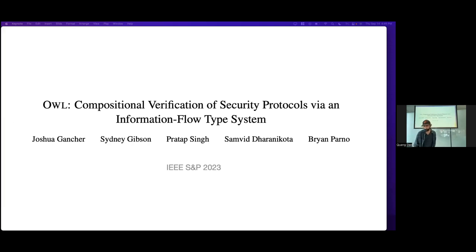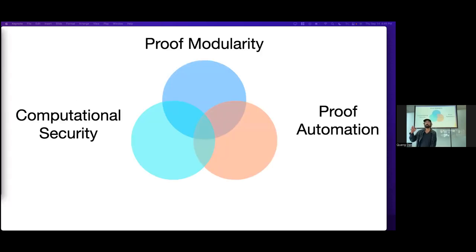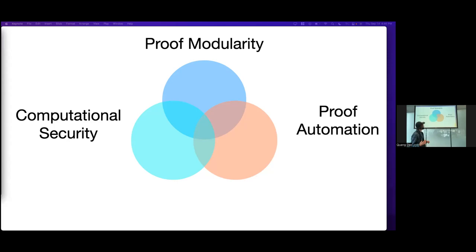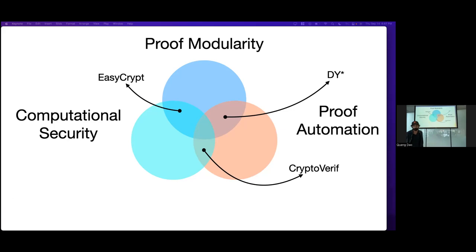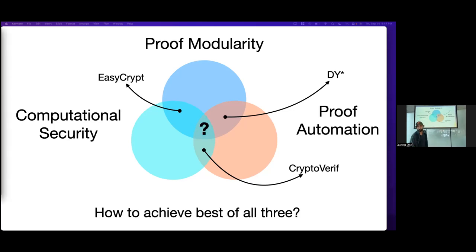For this proof assistant called OWL, there are broadly three components important for a scalable proof assistant: computational security, modularity (also called compositionality), and proof automation — meaning the user does not have to manually do a lot of proof effort to get the protocol to be secure. Many tools have some of these goals. EasyCrypt is both computationally secure and a modular proof assistant. DY* has modularity guarantees and automation but is not computationally secure. CryptoVerif has computational security and some automation but is not at all modular. Our question is how to get the best of all three worlds.